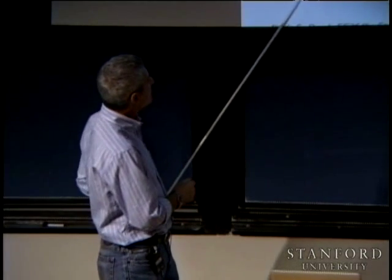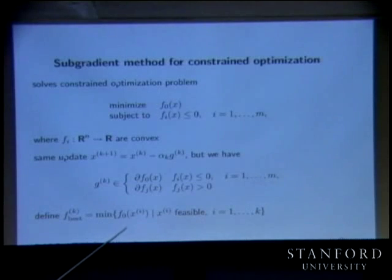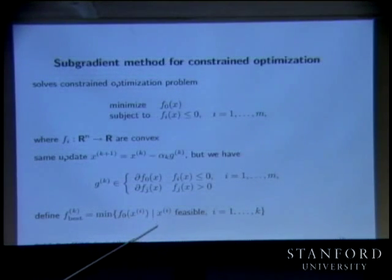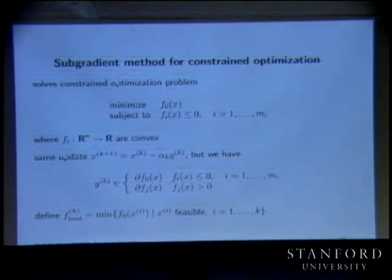We have to change a few things. F_k best is the best objective value we have over all the points that are feasible, and this can be plus infinity if you haven't found any feasible points yet.